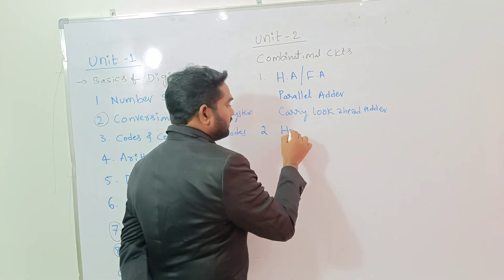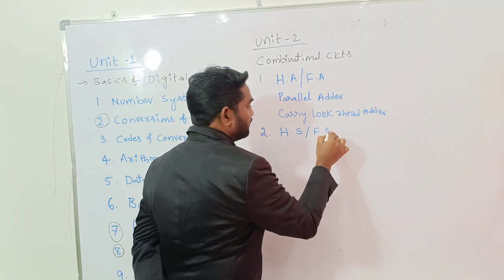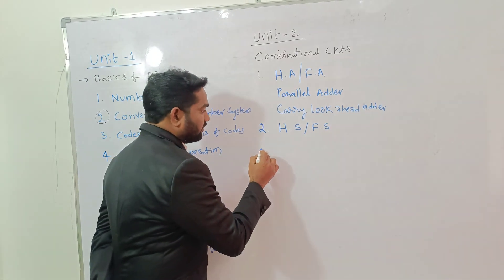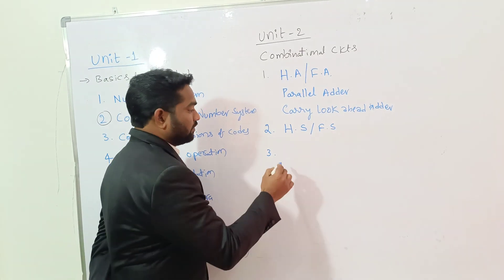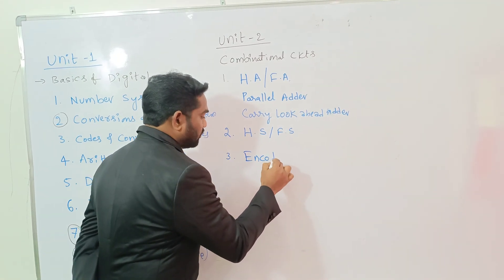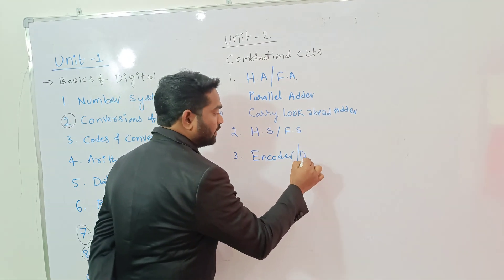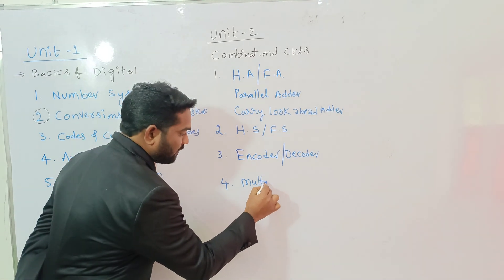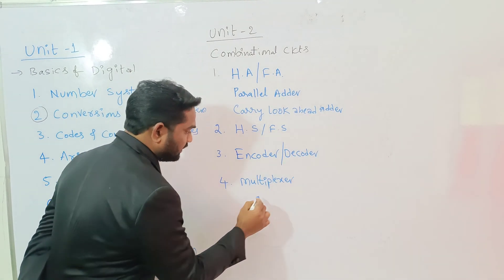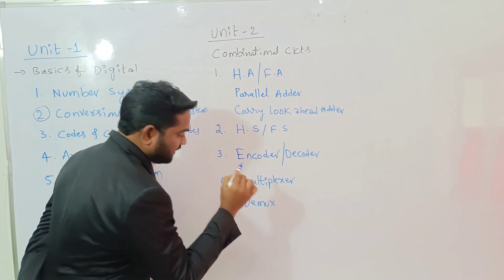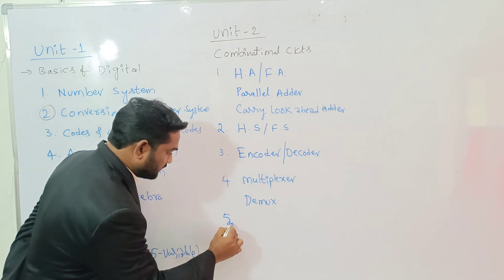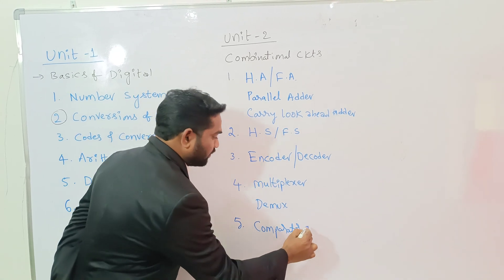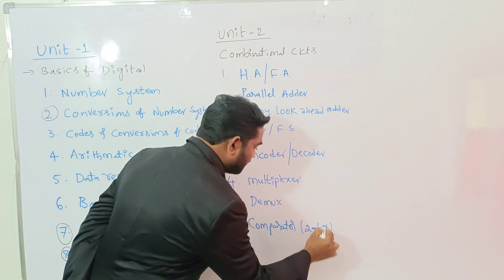The second topic is Half Subtractor and Full Subtractor. After learning adders and subtractors, we will immediately learn about Encoder and Decoder. The fourth topic is Multiplexer and Demultiplexer. The fifth topic is Comparator — up to a 2-bit comparator we will learn about.